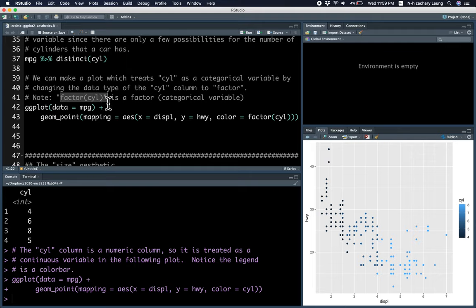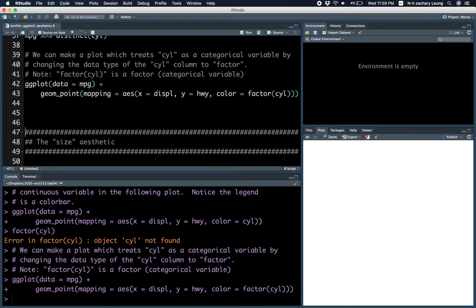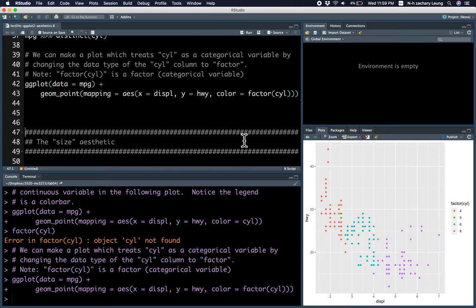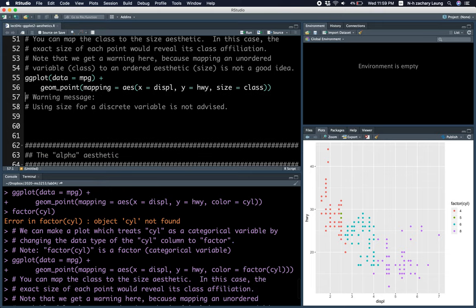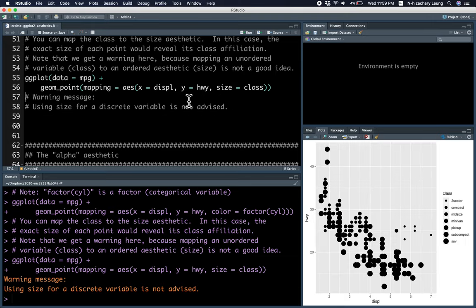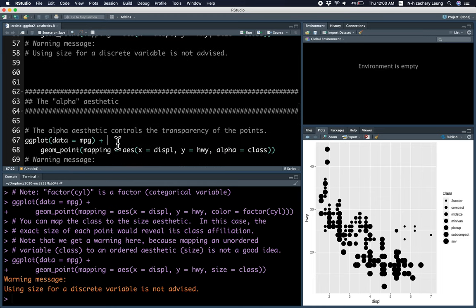You can also change the size of the points based on a column. Although that gives you a warning that this is not a good idea, since size is ordered from smallest to biggest - it's an ordered aesthetic - but the class variable is not really ordered.